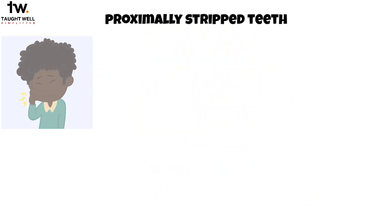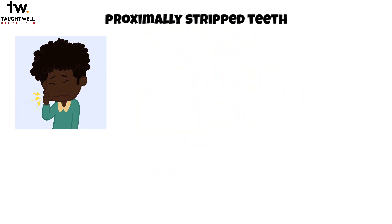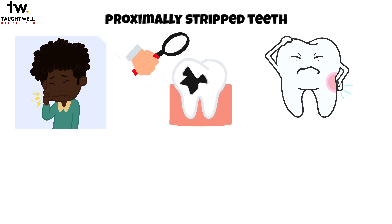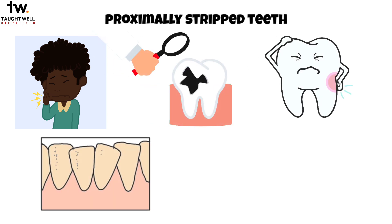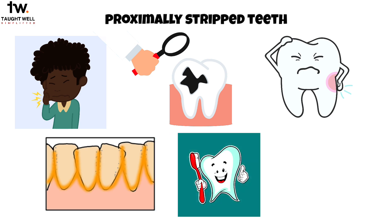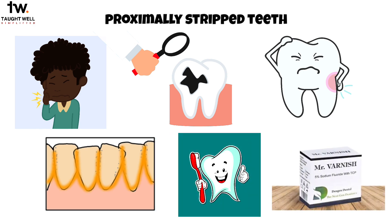Proximally stripped teeth may experience increased sensitivity due to enamel thickness reduction, making them more susceptible to sensitivity and caries. The scratched enamel surface also attracts more plaque, necessitating strict oral hygiene maintenance and fluoride application. These measures help reduce sensitivity, protect the teeth from acid attacks, and prevent caries.